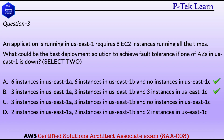Option C: 3 instances in US East 1A, 3 instances in US East 1B, and no instances in US East 1C. If East 1A goes down, we will have only 3 instances running in US East 1B, and since there are no instances in US East 1C, we will not achieve fault tolerance. So C is not correct. Option D: 2 instances in each of US East 1A, 1B, and 1C. If one zone is down, we are left with only 4 instances on the other two zones, so Option D is also not correct.